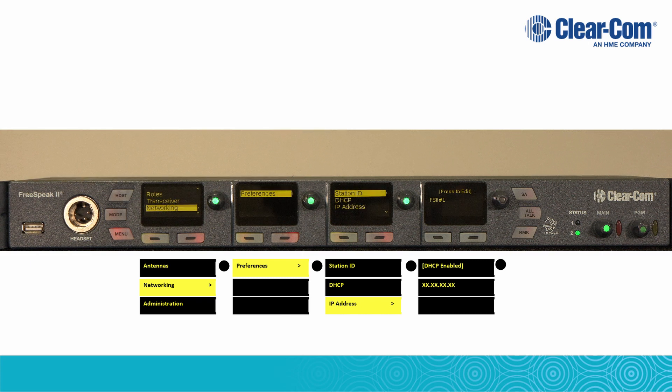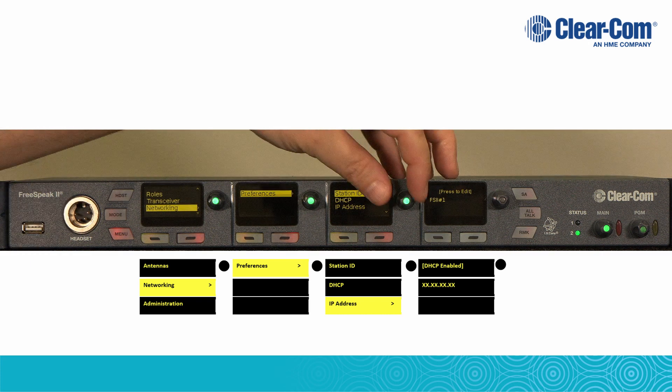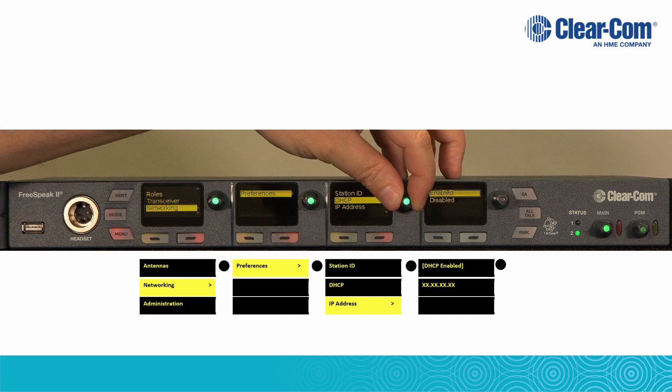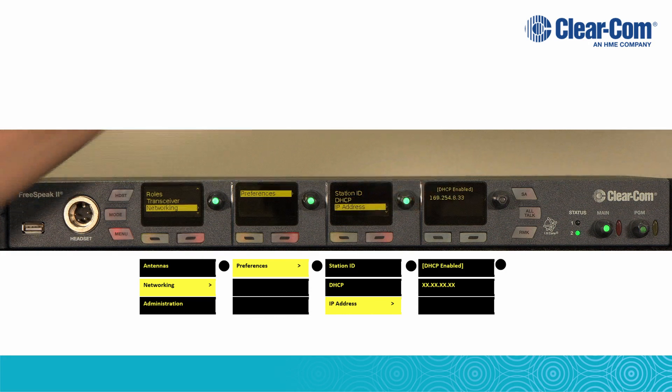Using the third volume knob, select IP address, then the IP address will be displayed in the fourth window.